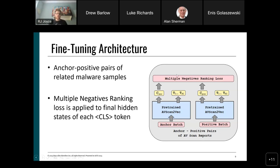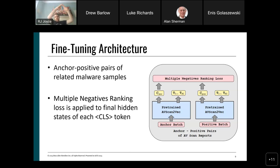We observed some pretty cool patterns during fine-tuning. The model works at different levels of granularity — two malware samples in the same family are located very close together, but also all ransomware clusters into one area, all Trojans go into another, and all keyloggers have their own broad area. So it's not just grouping similar malware families, but also broadly similar types of malware cluster together.